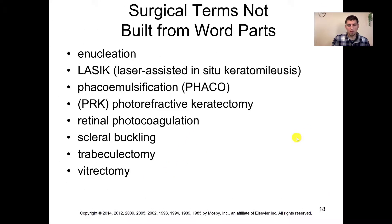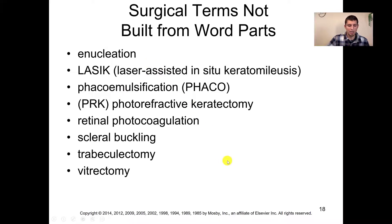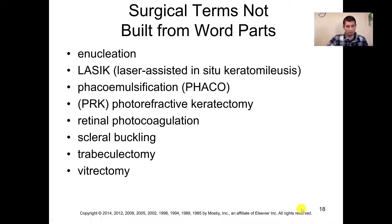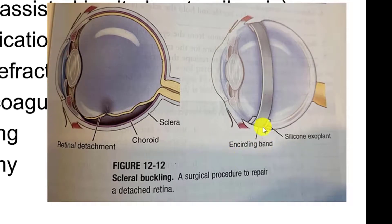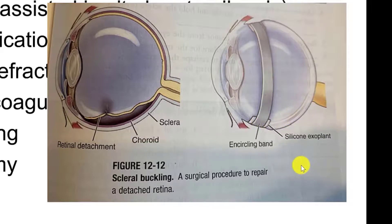Some other surgical terms you've probably heard: LASIK — laser-assisted surgery to reshape the corneal tissue to improve the patient's vision. FACO, or phacoemulsification, is a cataract procedure where they go in and remove the cataract. Scleral buckling is the procedure to reattach a detached retina — here we see the detached retina figure again, and on the right side of the image we see an encircling band placed there along with a silicone explant to help keep the retina connected to the choroid.